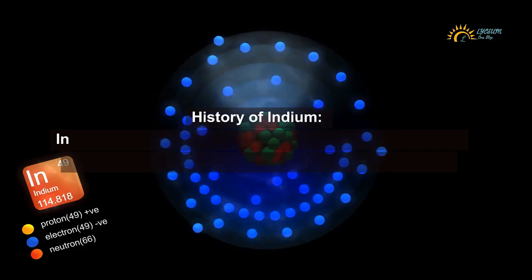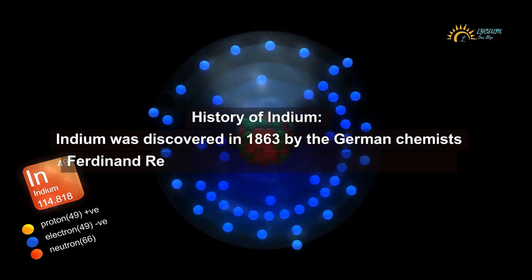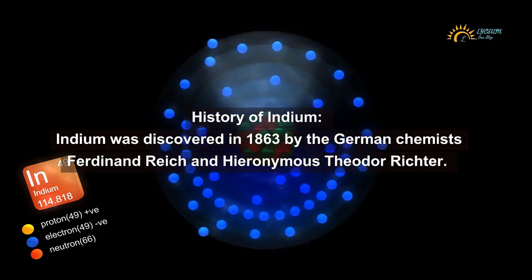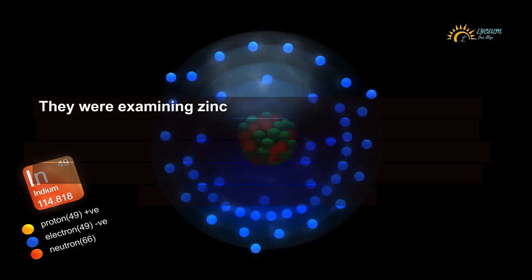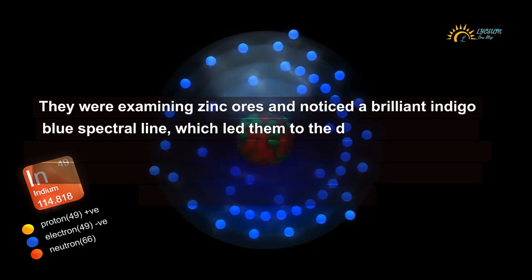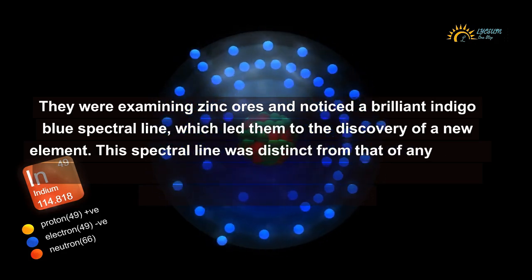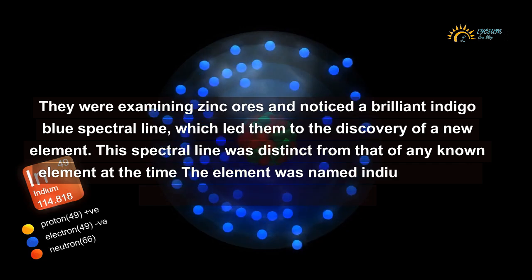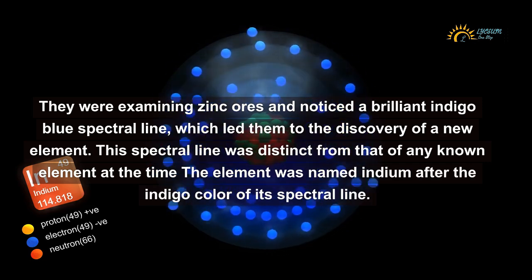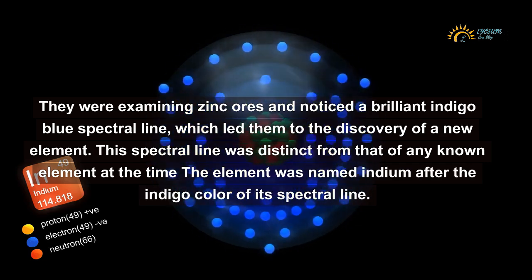History of indium. Indium was discovered in 1863 by the German chemists Ferdinand Reich and Hieronymus Theodor Richter. They were examining zinc ores and noticed a brilliant indigo-blue spectral line, which led them to the discovery of a new element. This spectral line was distinct from that of any known element at the time, and the element was named indium after the indigo color of its spectral line.